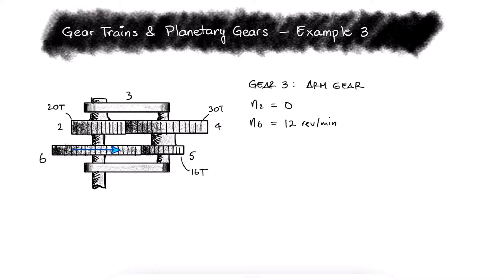From that main video, we know that the train value e will be equal to the speed of the last gear minus the arm gear over the first gear minus the arm gear. But the train value e doesn't need to be defined. This fraction on the right is just equal to the speed of the last gear over the speed of the first gear with respect to the arm.